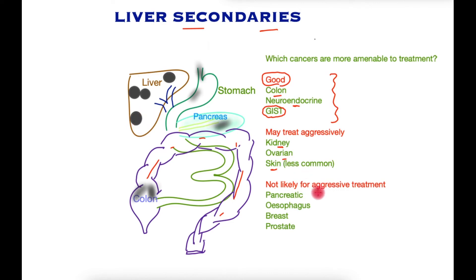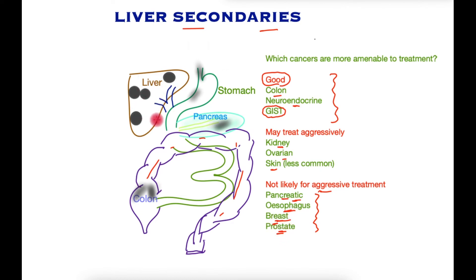However, other cancers such as the pancreas, the gullet, the breast, and the prostate are quite unlikely to be treated aggressively with liver-directed treatments, because by the time there is spread to the liver there is inevitable spread beyond the liver or multiple sites within the liver. Treating these cancers in the liver is therefore of no benefit, and these patients are best considered for whole body treatments such as chemotherapy or immunotherapy.